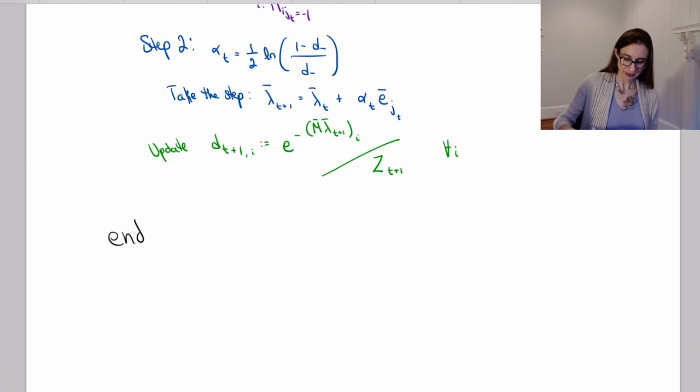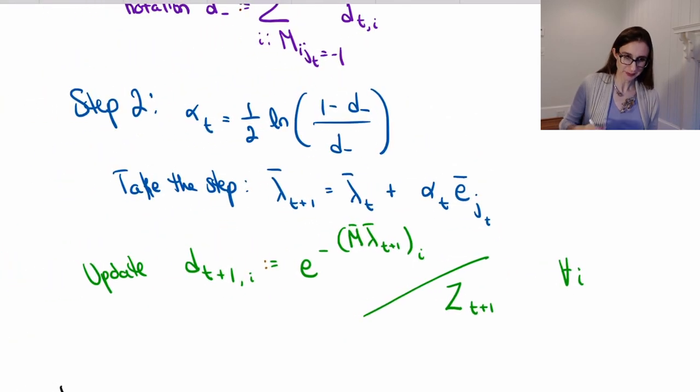Because this doesn't look like adaboost weight update rule. Adaboost takes the weights at time t and multiplies them by e to the alpha or e to the minus alpha depending on whether the point was misclassified, and then it renormalizes all the weights.